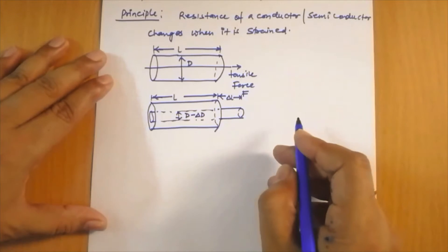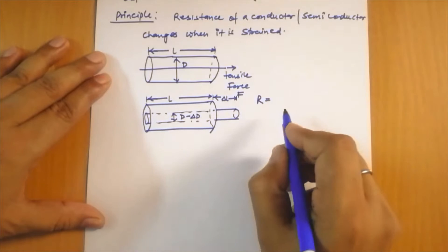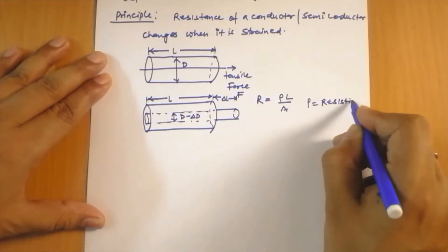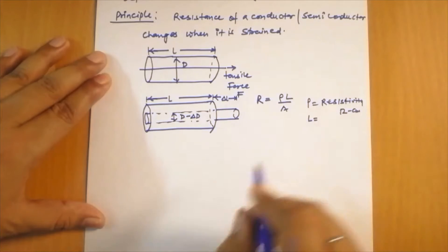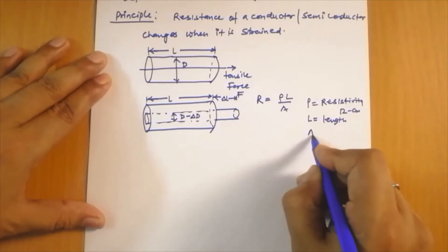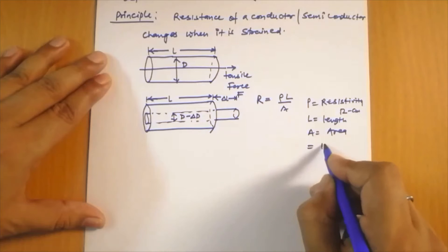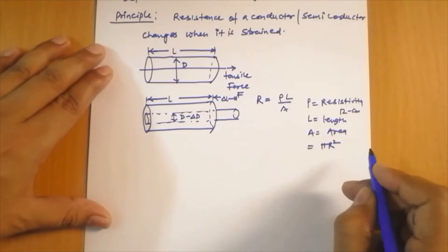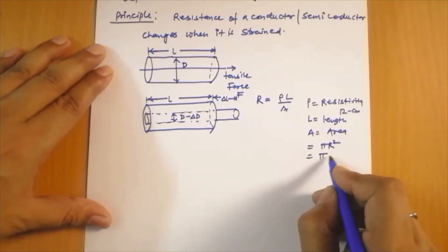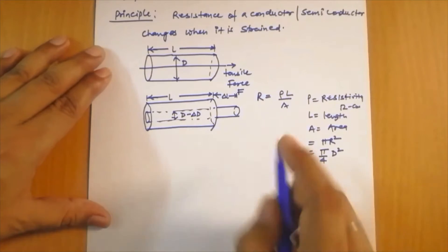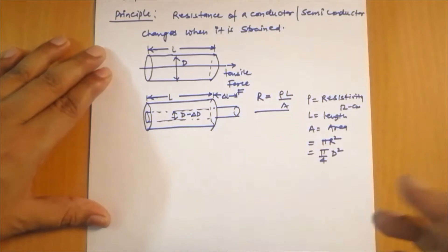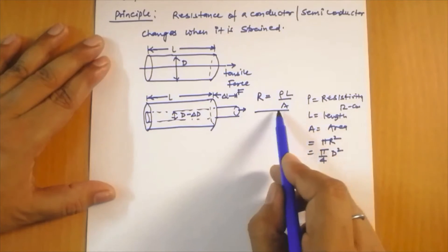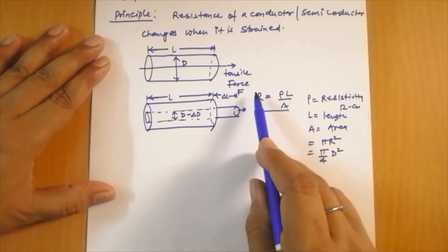The resistance of a wire is given by the expression R equals rho times L divided by A, where rho is the resistivity in ohm-centimeter, L is the length, and A is the cross-sectional area equal to pi over 4 times D squared. Since a tensile force is applied, both L and the cross-sectional area A will change, and hence the overall resistance of the wire will change.